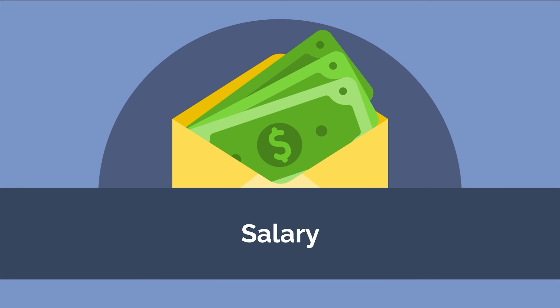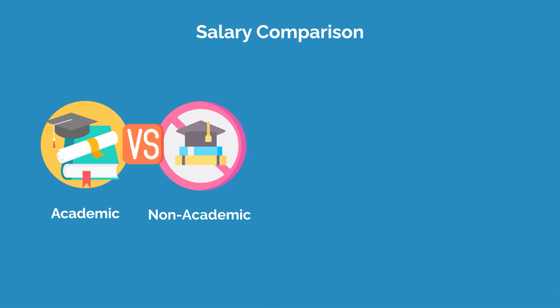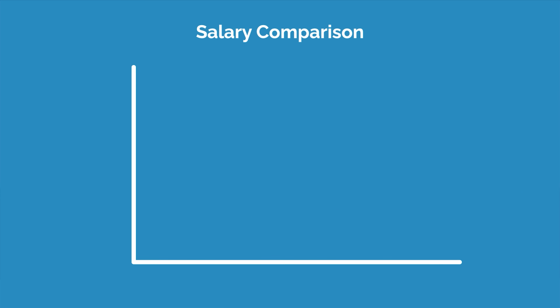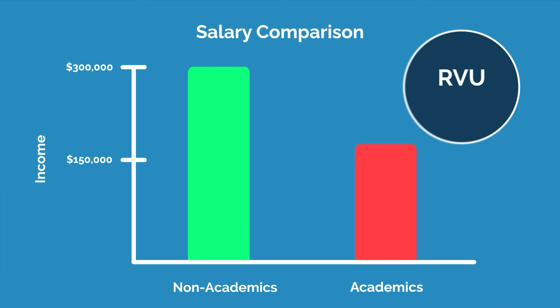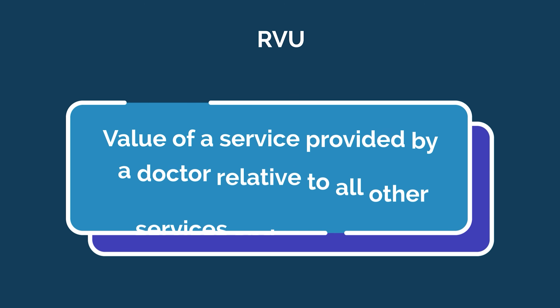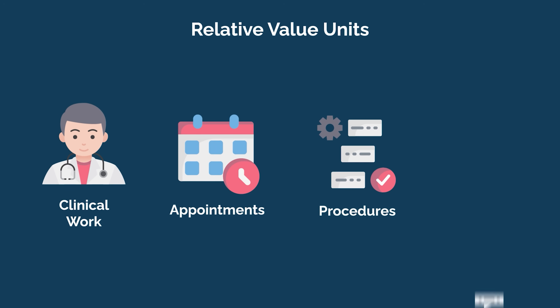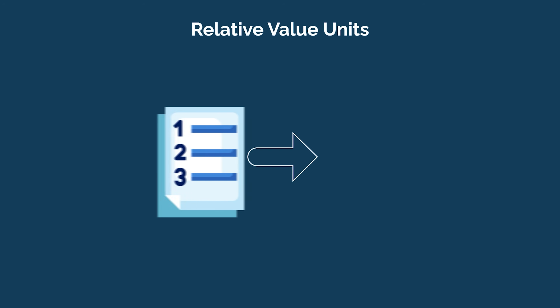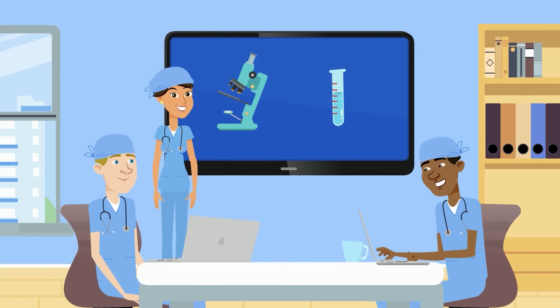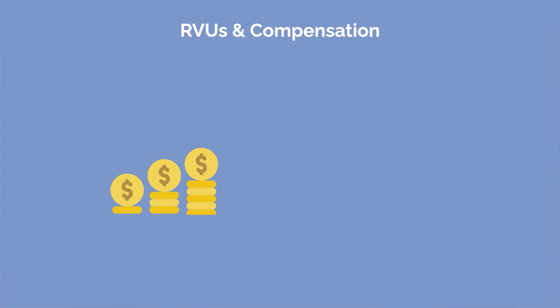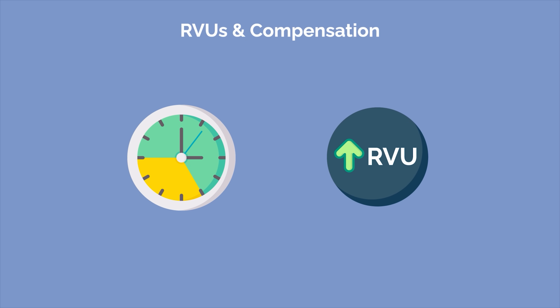Let's talk about differences in pay, looking at academic vs. non-academic and employed vs. private practice. Physicians in non-academic settings can earn as much as $120,000 more per year than their academic colleagues. This is where relative value units, or RVUs, come into play. RVUs define the value of a service provided by a doctor relative to all other services and procedures. Since academic physicians have non-clinical duties such as teaching and research, less time is available for patient care, which generates fewer RVUs. Non-academic physicians have more time for clinical tasks, generating more RVUs for their hospital or private practice.